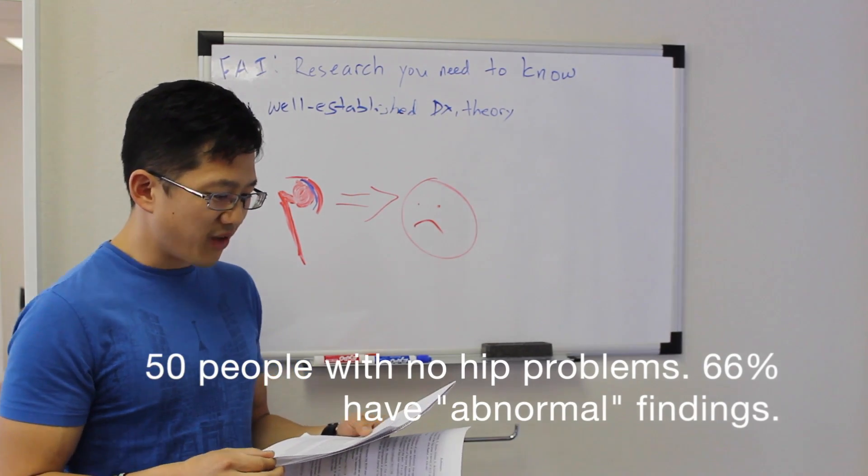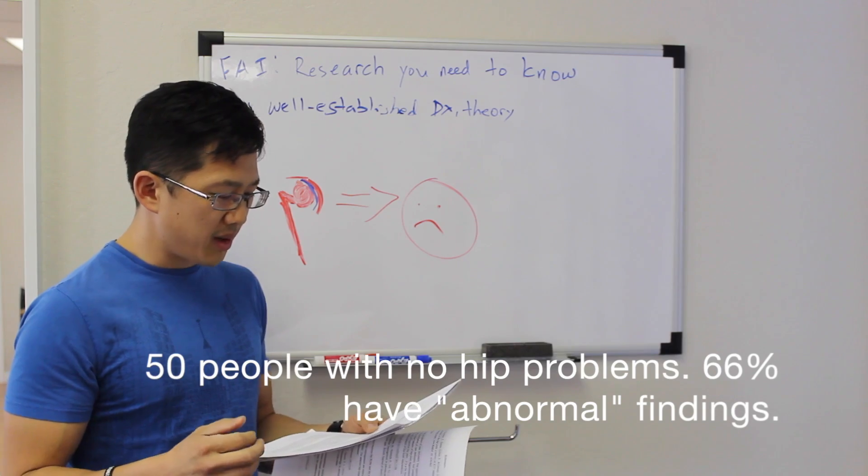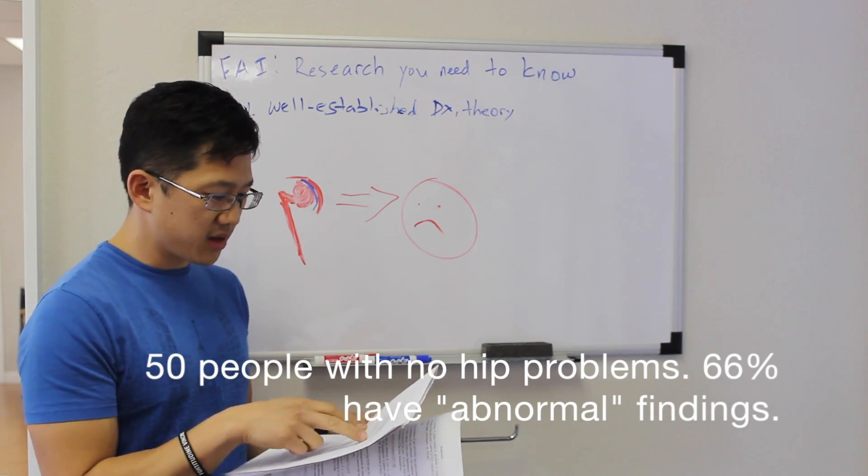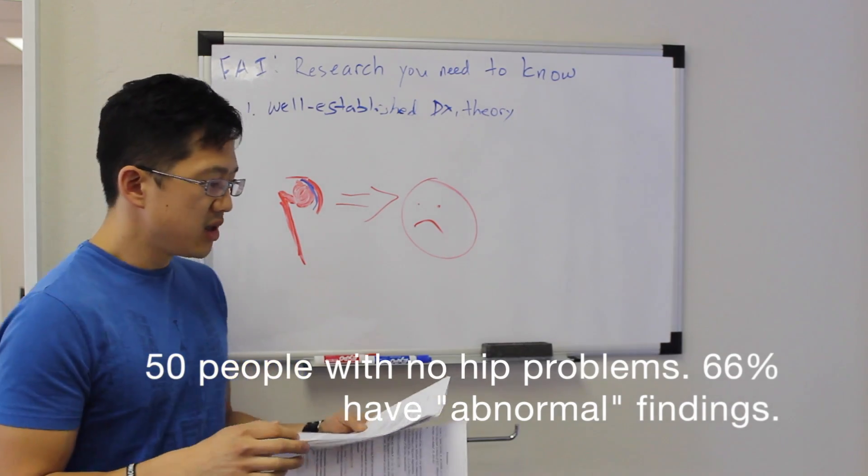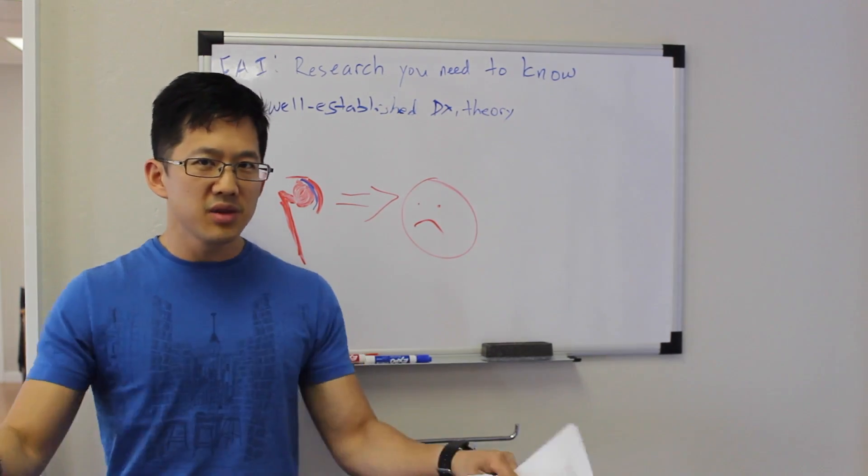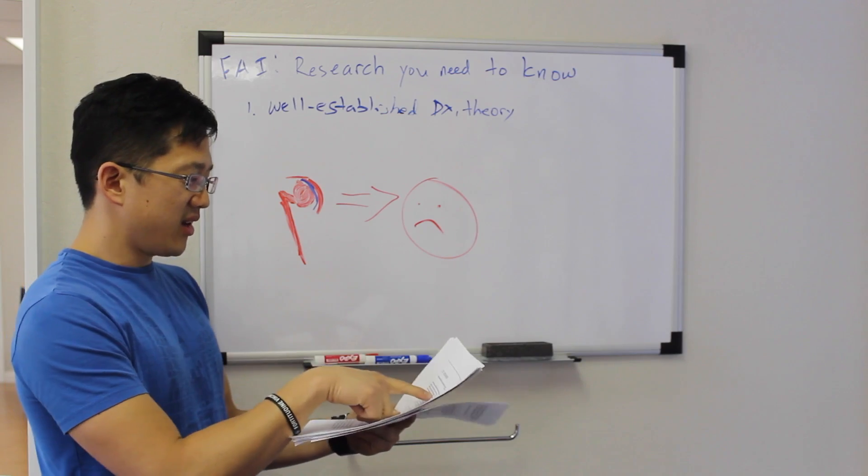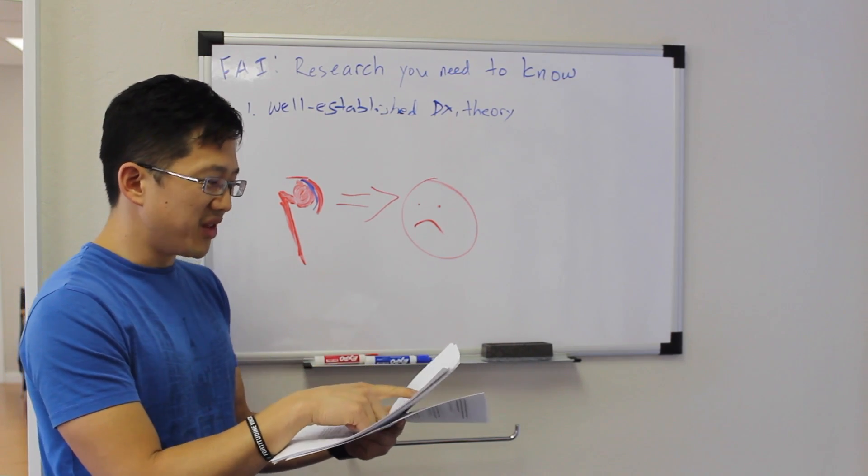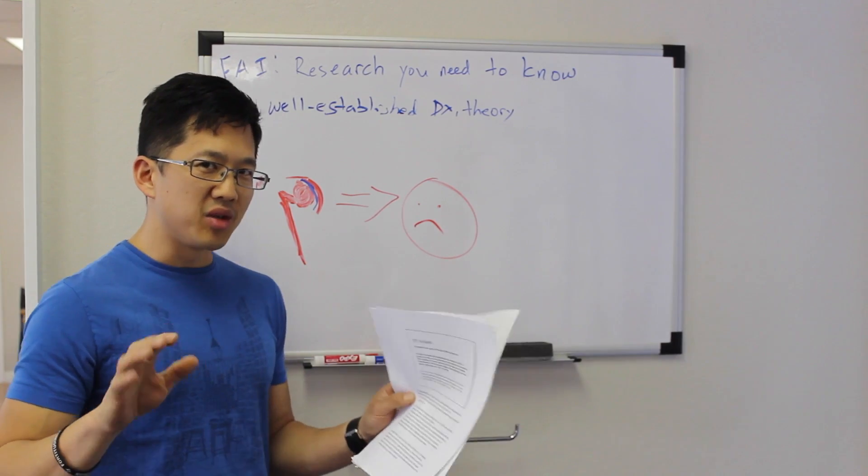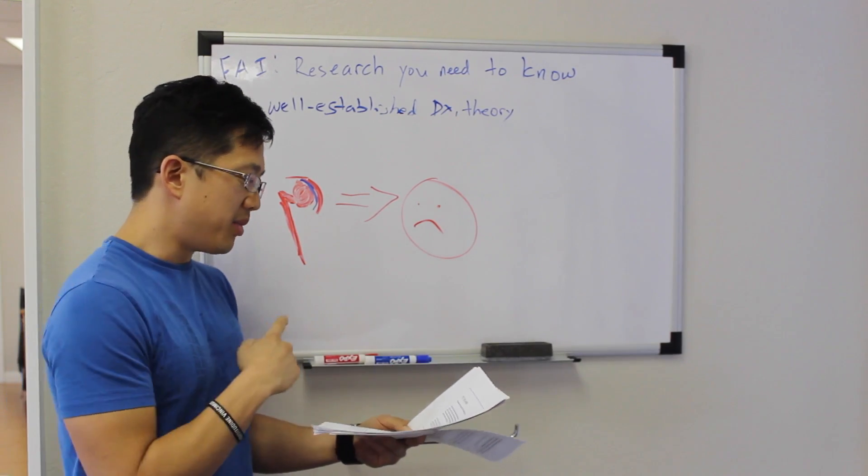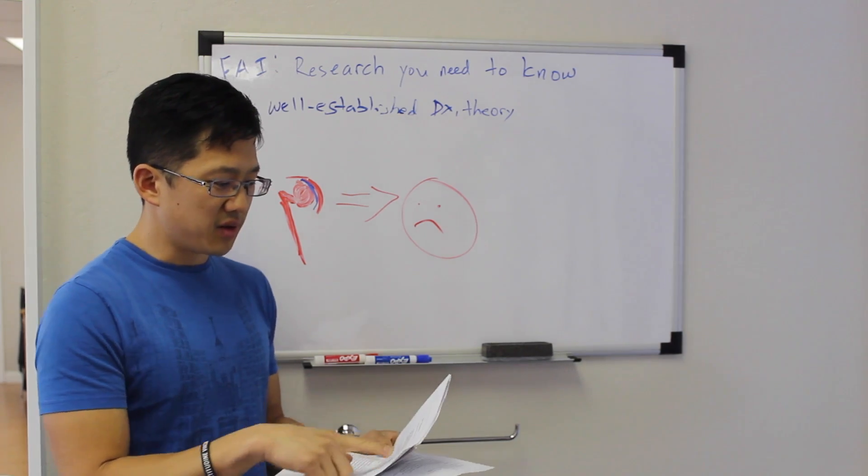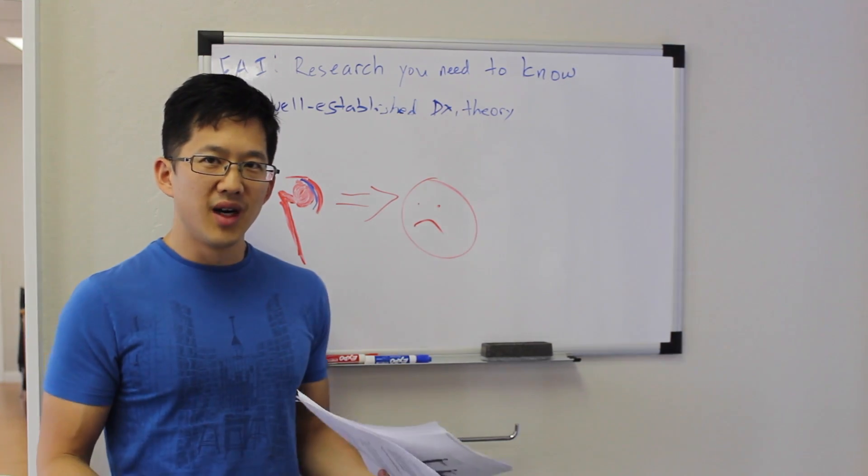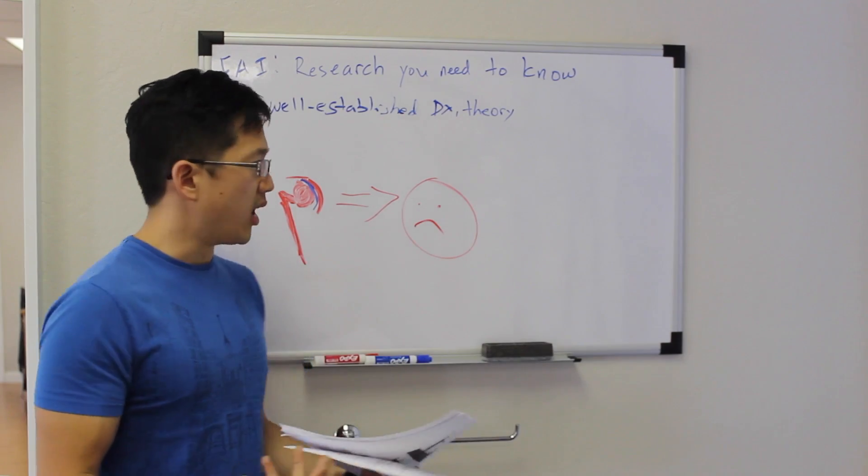In seven patients, the findings were bilateral. So parameters of mixed morphologic characteristics, meaning cam and pincer, were found in 22% of joints. So you had 50 people who had zero symptoms, and you had 66% of them with at least one thing that kind of made you go, hmm, maybe they have impingement going on. And you had 30% of the joints that had two or more abnormal things going on. But these are 50 people who have no problems.